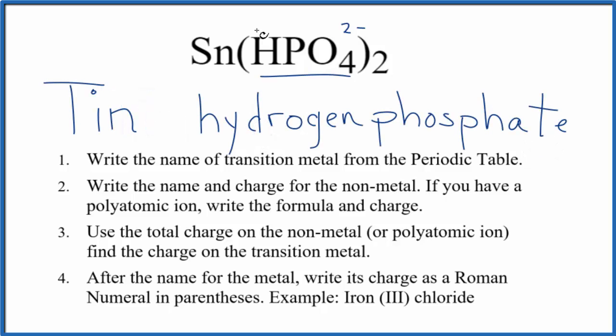We're almost done. But since tin is a transition metal, we need to write the charge in Roman numerals here. So we know that the hydrogen phosphate is two minus. Two times two minus, that's four minus. The tin has to be four plus. So we need to write the Roman numeral four and then put parentheses around it.